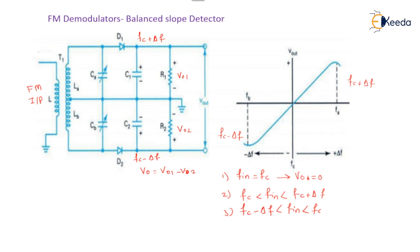The slope detection looks linear but has certain disadvantages. It is more difficult to tune as there are three tuned circuits, each at three different frequencies. Amplitude limiting is not provided, and even though we say the linearity is good enough, it is not actually that good. This is all about the balanced slope detector. Thank you for watching.